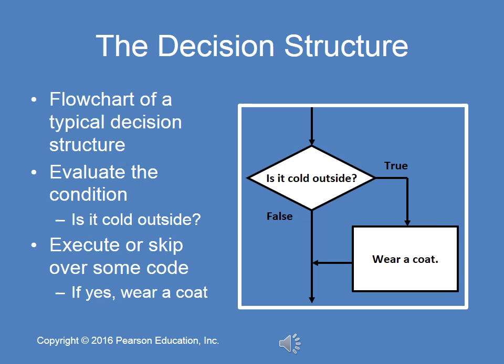Here's an example of a decision structure for a decision we've all made. Is it cold outside? I typically use around 40 degrees. If it's less than 40 degrees out — true — wear a coat. If that statement's false, don't wear a coat. We'll be talking about how we evaluate that condition using Boolean terms.